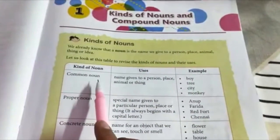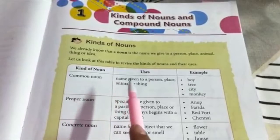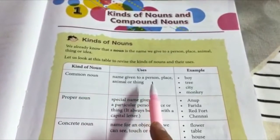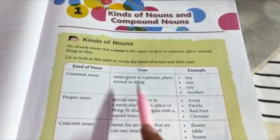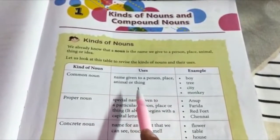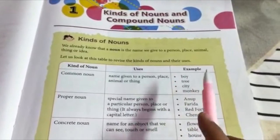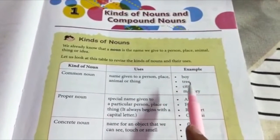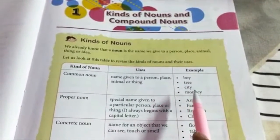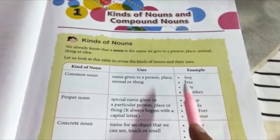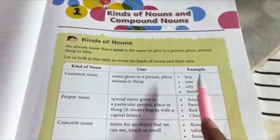Common noun. A common noun is the name given to a person, place, animal or thing in general. For example: boy, tree, city, monkey. It can be any boy.